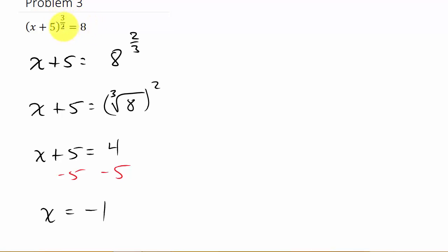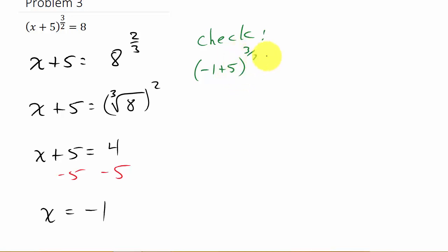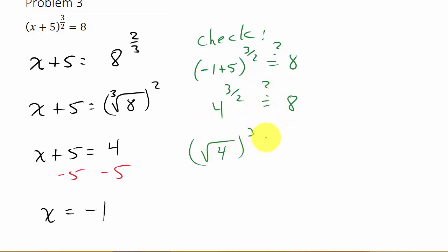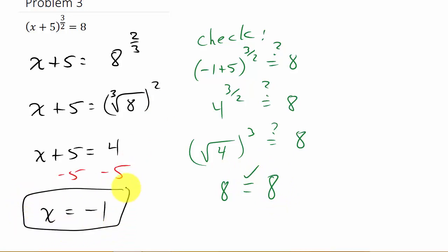But we do have to check our solution because we raised both sides to the power of 2 — an even number. Plugging negative 1 in for x: negative 1 plus 5 is 4, so 4 to the 3 halves. That's the square root of 4 cubed. The square root of 4 is 2, and 2 cubed is 8. So 8 equals 8 — that checks. x equals negative 1 is our solution.